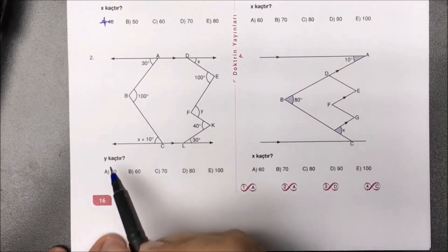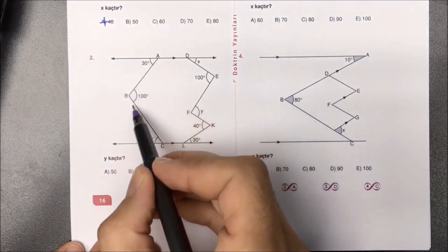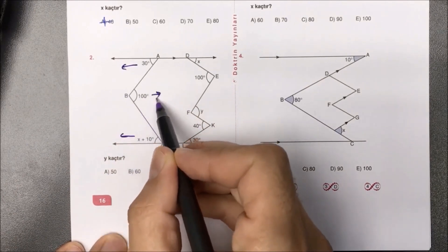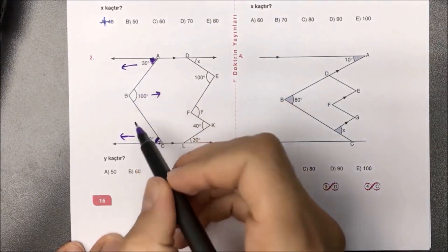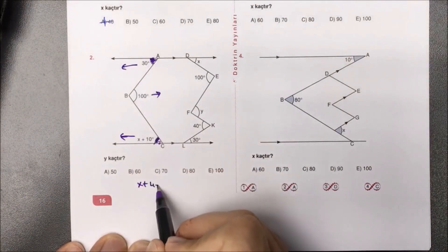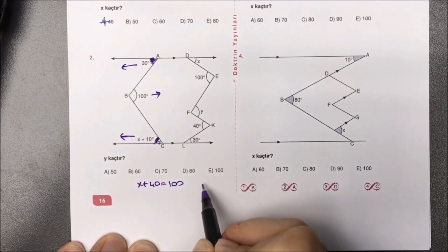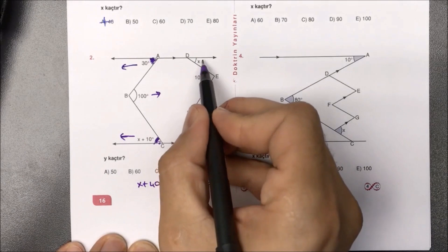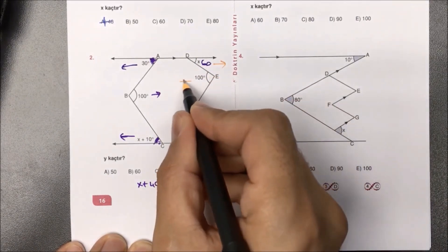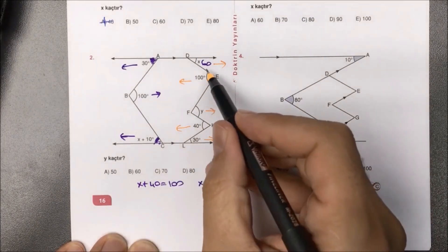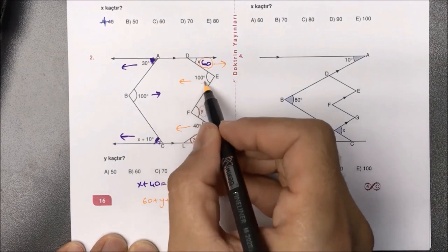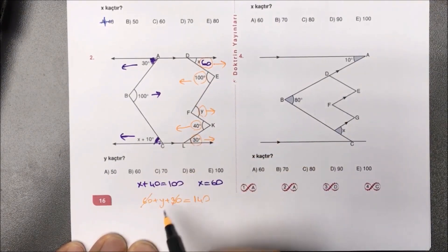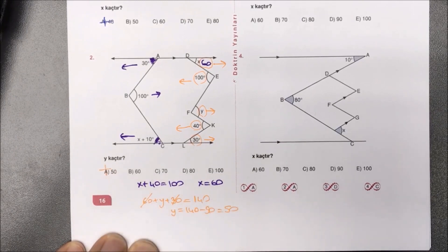İkinci sorumuza geldik: Y kaçtır diye bize sorulmuş. Hemen M kuralı yani sola baktı, sağa baktı görüyorsunuz. M kuralında içeride kalan iki açının toplamı dışarıdaki açıyı bize veriyor. Dolayısıyla 30 ile X artı 10'u toplarsak X artı 40 gelecek; kaçı eşitti? 100. 40'ı karşı tarafa atacak olursak X buradan 60 olarak bulunmuş olur. Sağ tarafta X değerini 60 yapıp: sağa baktı, sola baktı, sağa baktı, sola baktı, sağa baktı. Sağ bakanların toplamları 60, Y ve 30; topladık; sola bakanların toplamı 100 ve 40 yani 140. 60 ile 30 topladık 90; karşı yatarsak 140 eksi 90'dan aradığımız yanıt 50 olarak bulunmuş olur.